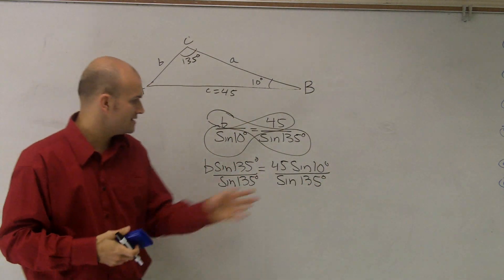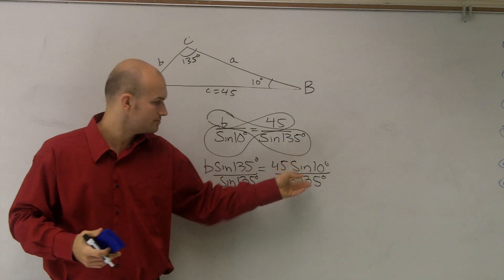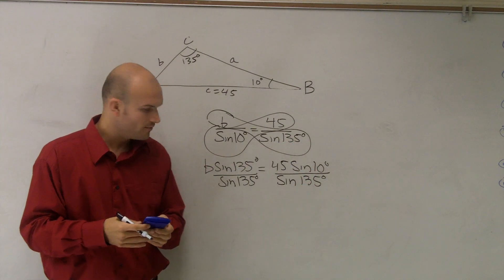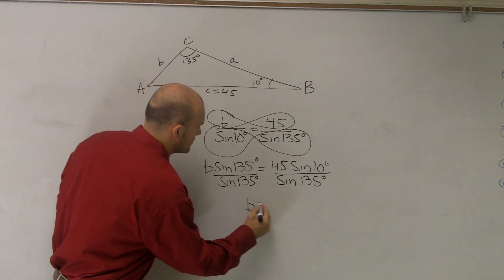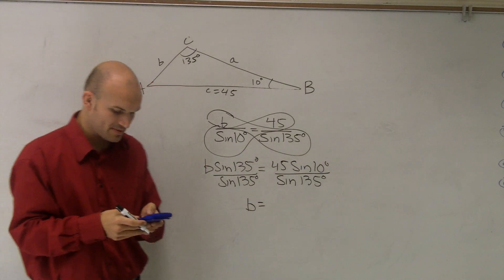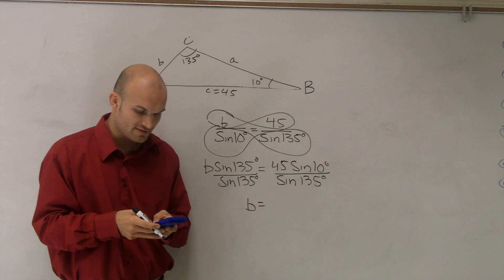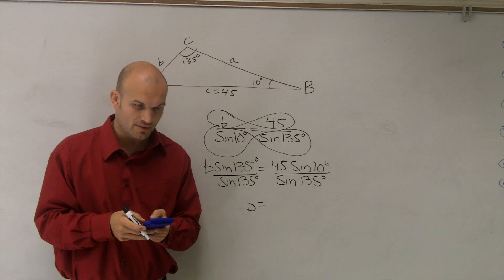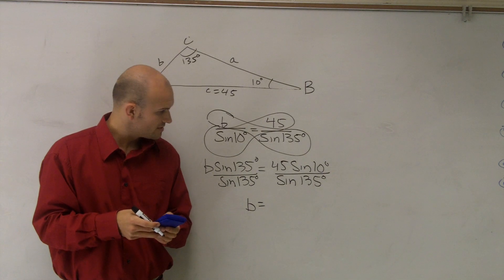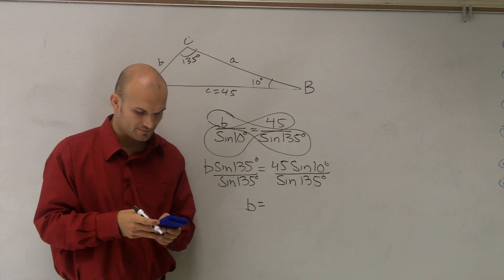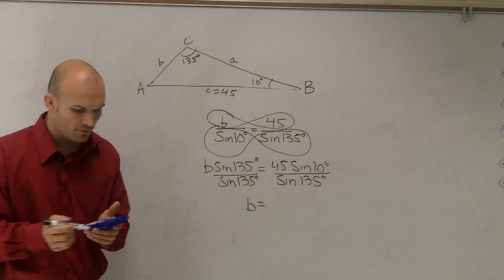Now, I can't evaluate these. I know these are not going to be angles that I know of on my sine of 10. So what I'll simply do is I'm just going to plug that in. So B equals, listen how I type this in my calculator, 45 times the sine of 10 degrees. Make sure you end your parentheses, and then divide by sine of 135.